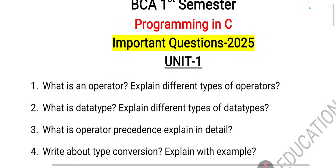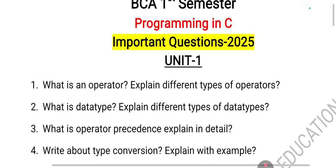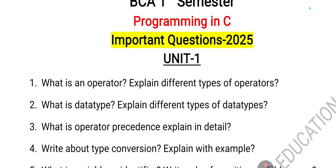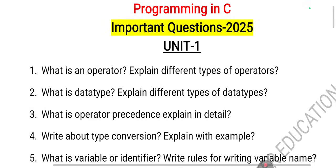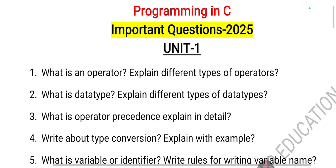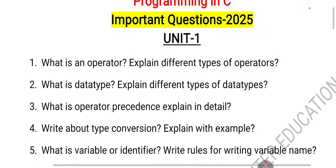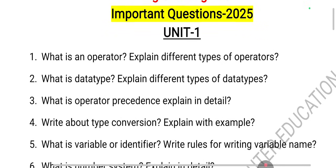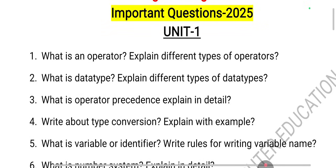Type conversion means converting from one data type to another, also called type casting. There are two types: implicit type casting and explicit type casting. You must explain both with example programs.